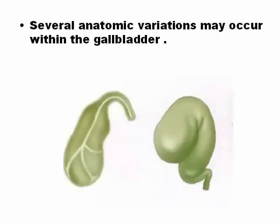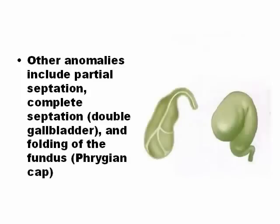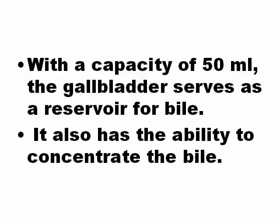There are different gallbladders with different shapes and different positions. The gallbladder may fold back and present a more pronounced Hartmann's pouch. Other anomalies include partial septation, complex septation, and double gallbladder. Something that is more common is the Phrygian cap, which is more common to find. With a capacity of 50 milliliters, the gallbladder serves as a reservoir for bile. It also has the ability to concentrate bile, and this is the problem when the gallbladder concentrates too much — that can produce stones, crystallizations inside the bile.